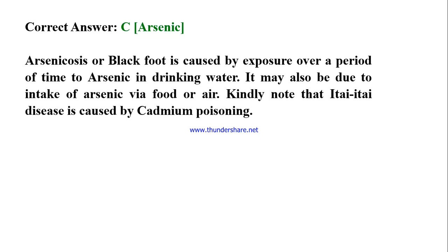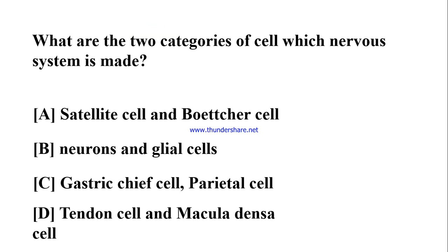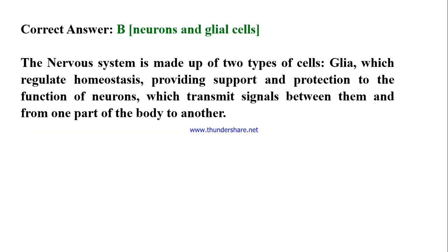What are the two categories of cells which the nervous system is made of? A) Satellite cell and Böttcher cell, B) Neurons and glial cells, C) Gastric chief cell and parietal cell, D) Tendon cell and macula densa cell. Correct answer: B) Neurons and glial cells. The nervous system is made up of two types of cells: glia, which regulate homeostasis and provide support and protection to neurons; and neurons, which transmit signals between them and from one part of the body to another.